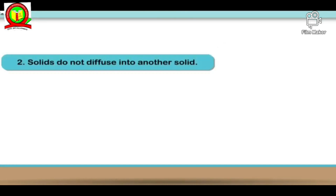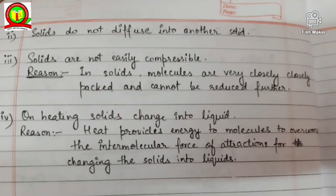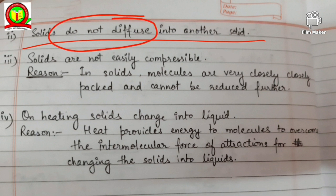The second property of solids is that they do not diffuse into another solid. For example, if you have a razor and a pencil and try to mix them, you cannot get one inside the other — they cannot mix with each other. Solids do not diffuse into another solid.